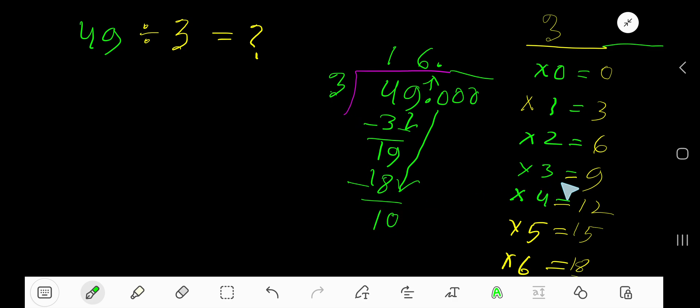3 goes into 10, how many times? 4 times 12, which is greater, so 3 times. Write 3, 3 times 3, 9. Subtract 1.